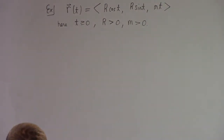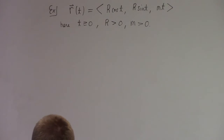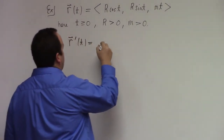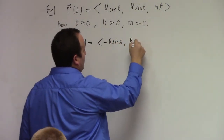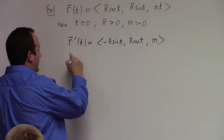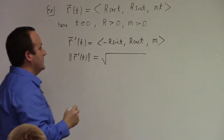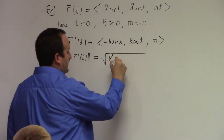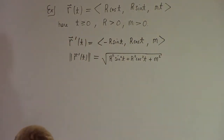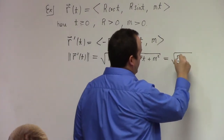What's the arc length function for this curve? How do I find that? I need to calculate the speed — the magnitude of the velocity. So R prime of T is minus R sine T, R cosine T, M. That's your velocity vector. The magnitude of R prime of T is the square root of R squared sine squared T plus R squared cosine squared T plus M squared, which simplifies to the square root of R squared plus M squared.